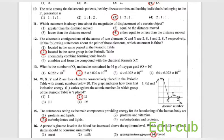Twelfth question: the electron configuration of atoms of two elements X and Y are 2,8,1 and 2,8,7 respectively. Of the following statements about the pair of those elements, which statement is false? Located in the same period, it is correct. Located in the same group in the periodic table, they are not located in the same group in the periodic table. Chemically combined forming ionic bonds, it is correct. Combined and form the compound with chemical formula XY, it is correct. The false one is located in the same group in the periodic table.